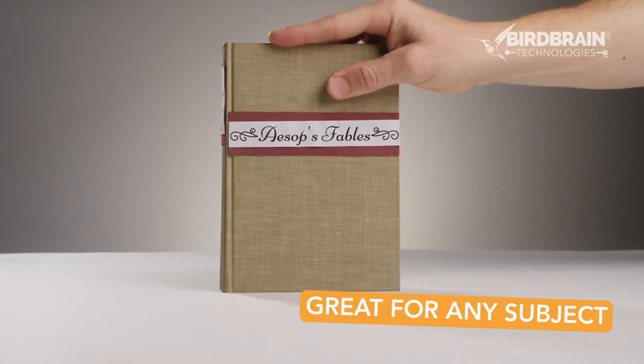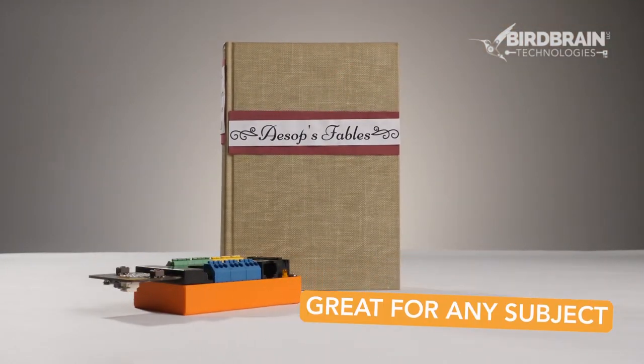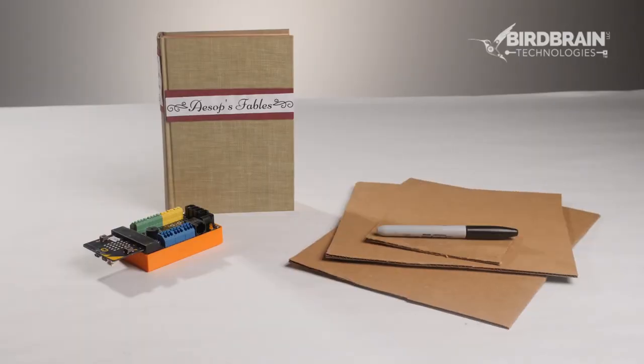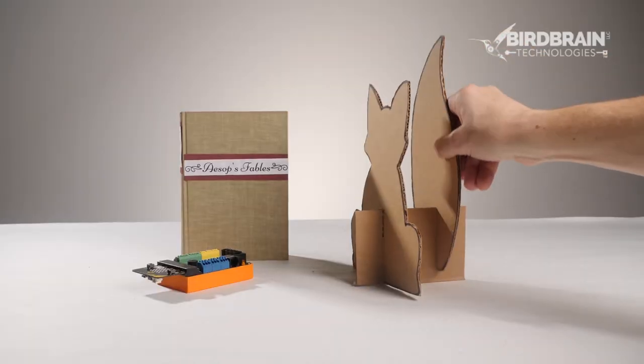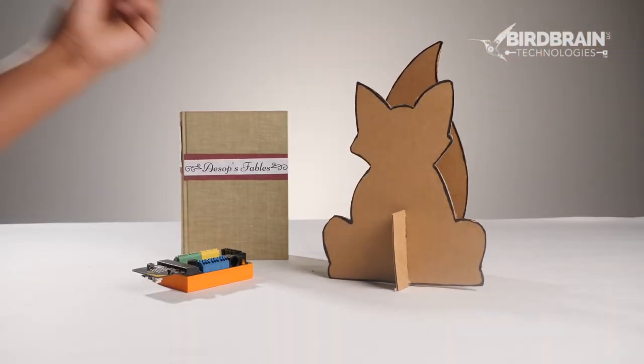The power of the Hummingbird kit is in its flexibility to seamlessly integrate robotics across your curriculum. Students can practice coding and design thinking in every subject area.